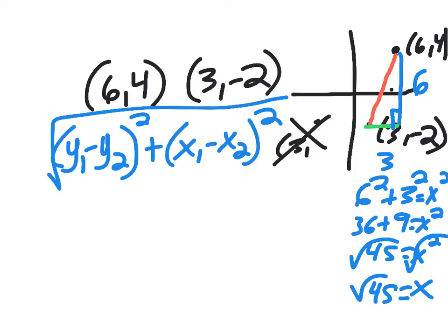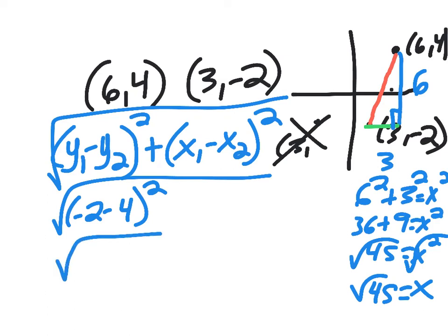So if I subtract my y coordinates, I'm going to end up with negative 2 minus 4, I'm going to square that, so that would be negative 6. When I square that, I end up with 36, and you'll see that's what I have here. So when you subtract, you're finding the distance right over here that you found, that's 6.